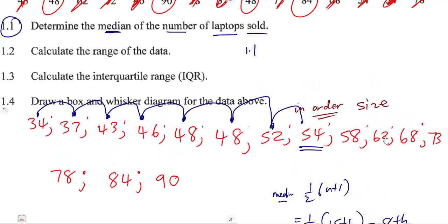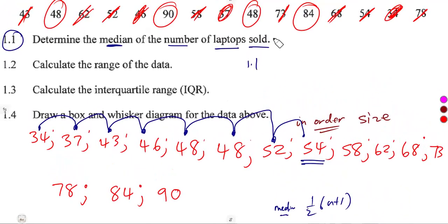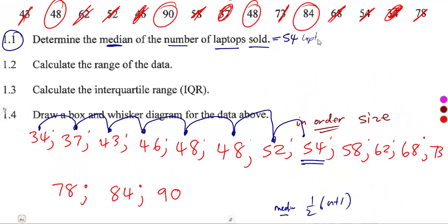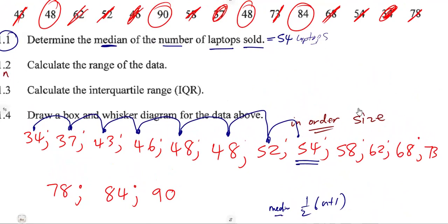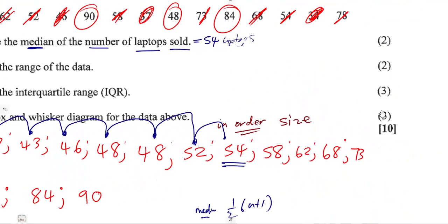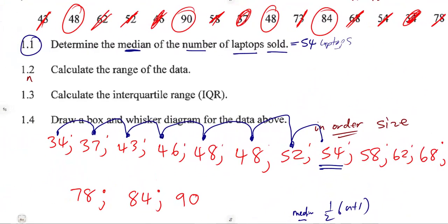The median is 54 laptops. We needed its position first to identify that value. That was for two marks. Now let's move on to the next part of the question.